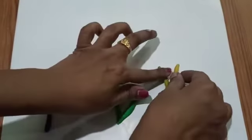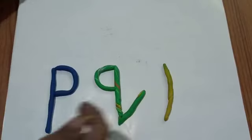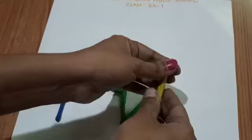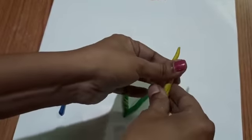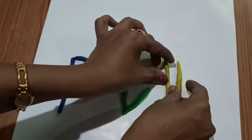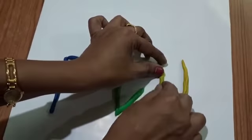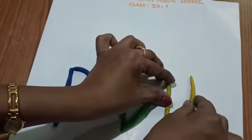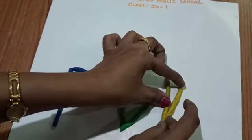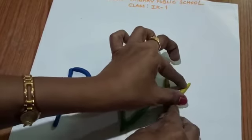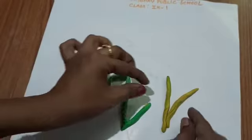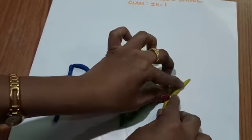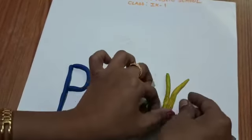This is the letter R. See, this is P, this is the letter Q, this is the letter R. See, first one small slanting line, again another slanting like this. This is the letter R.